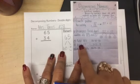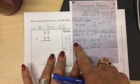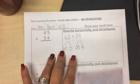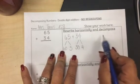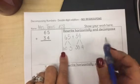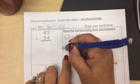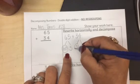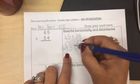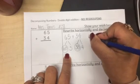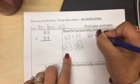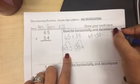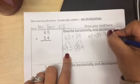The next step on our mini anchor chart — please read number three. Add tens. So let's go ahead and add the tens. The tens in 65 and 34 are 60 and 30. I'm going to circle them so that I remember I've already written them out. Write 60 plus 30. What is 60 plus 30? It's equal to 90.